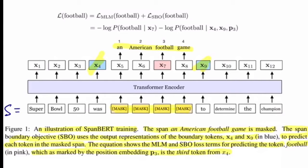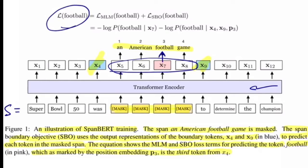In the perturbed masked sequence, the span 'an American football game' is replaced with mask tokens. We pass the full sequence through the encoder block and at the output end predict all masked tokens X5 to X8. For example, to predict token X7 ('football'), we propagate a loss that is a mixture of masked language modeling and span boundary objective.